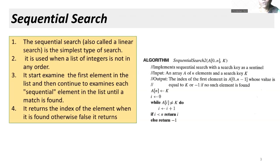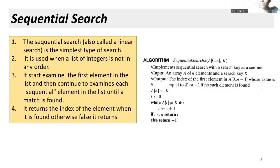So where do we encounter searching in a real scenario? Let's take a simple example. Suppose a faculty in your classroom wants to find whether a particular student is present or not. They are simply doing a searching — by roll number or by name. In the same way, in all searching algorithms, given a list of elements either ordered or unordered, we search by a key.